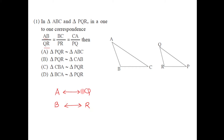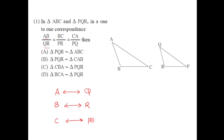Those are the two corresponding vertices of A and B from the first ratio. In the second ratio we have BC/PR, so the only remaining correspondence is C, which corresponds to P. So the corresponding vertices of A, B and C are Q, R and P respectively.